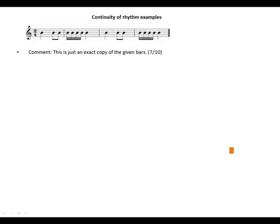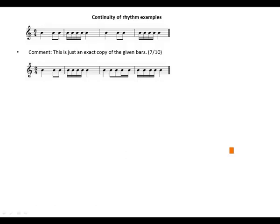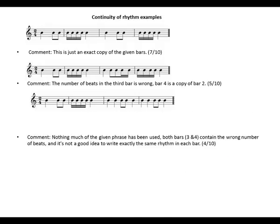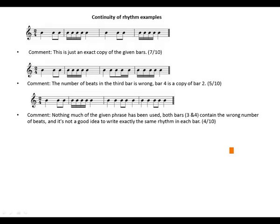This next example is just an exact copy of the given phrase, so you can get seven out of 10. In another example, the number of beats in bar three is wrong, and bar four is a copy of bar two, so you can get five out of 10. In the worst example, nothing much of the given phrase has been used, both bars contain the wrong number of beats, and it's not a good idea to write exactly the same rhythm in each bar — so you can get four out of 10. Thank you for watching, and let's meet again next time.